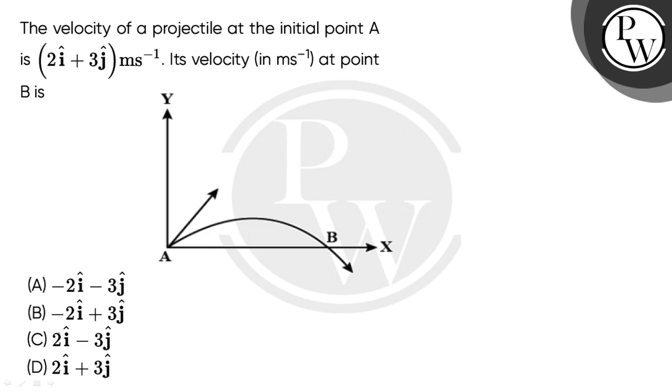We have the velocity of a projectile at the initial point A. Here we have the initial velocity. The u vector is given: 2i cap plus 3j cap. So this is ux and this is uy.